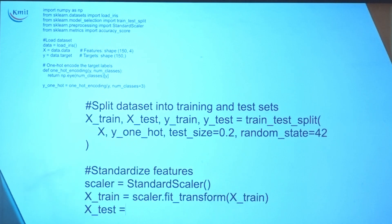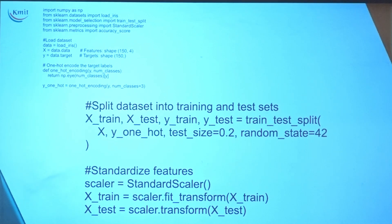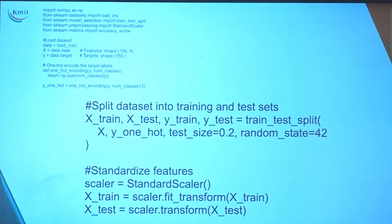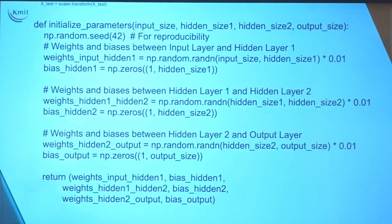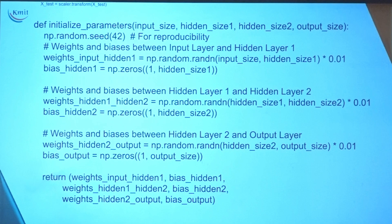Then we split the dataset into training and test sets, followed by standard scaler standardization. If you look at the dataset, there is a variation of values; we want to standardize those values. For classification tasks, standardization is more preferable. Then we initialized the parameters.